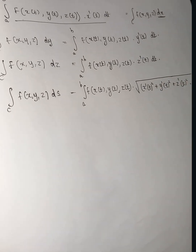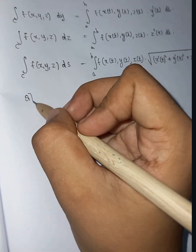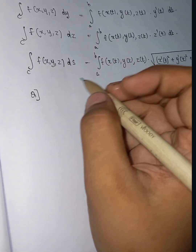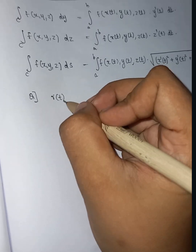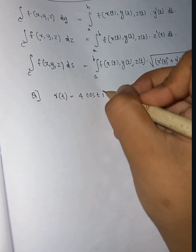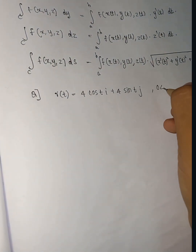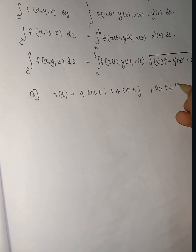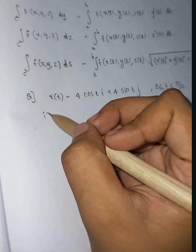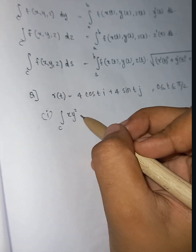Now let's look at a problem. We have R(t) = 4cos(t) i + 4sin(t) j, where 0 ≤ t ≤ π/2. We need to evaluate the following line integrals: (1) integral over C of xy² dx, (2) integral over C of xy² dy, (3) integral over C of xy² ds.